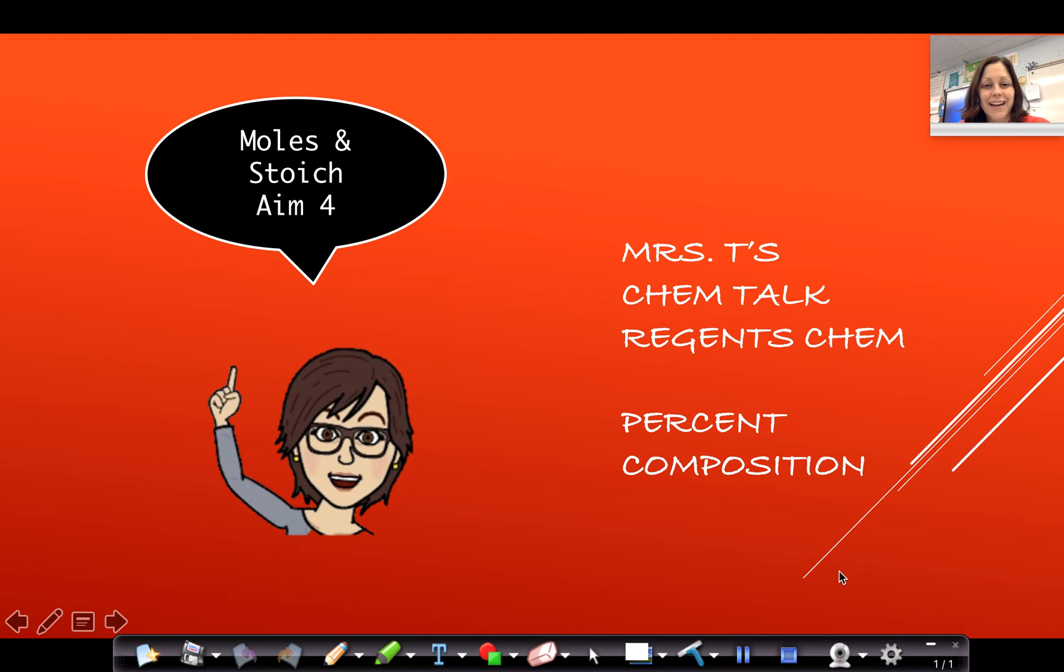Hi guys and girls, it's Mrs. T. This is going to be a really quick video on how to do percent composition. Please make sure that you have your aim sheet because we're going to be looking over aim number four. You should also have your reference tables because we'll need the periodic table and the table T. You should have a calculator available and something to write with.